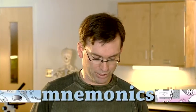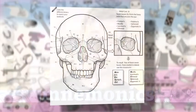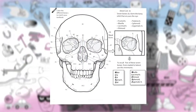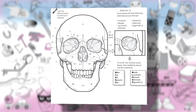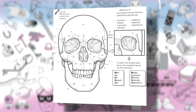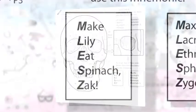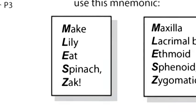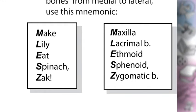Another key feature of the book is the use of mnemonics throughout. This helps students remember key anatomy and key bones. In this case, we have the bones of the orbital complex in the orbit of the eye. The mnemonic is 'Make Lily Eat Spinach Sac,' which stands for the maxilla, lacrimal bone, ethmoid bone, sphenoid, and zygomatic bones.